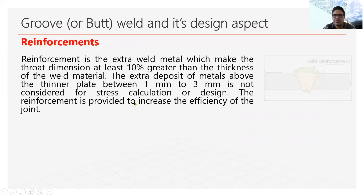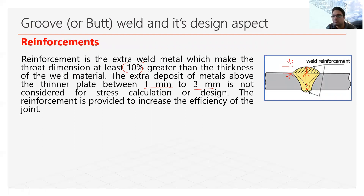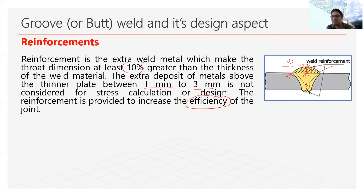Reinforcement is the extra weld metal above the joint, about 1 mm to 3 mm. It makes the throat dimension at least 10% greater, but we do not consider this extra value in calculations. This reinforcement is left above the joint to increase the efficiency and provide additional strength.